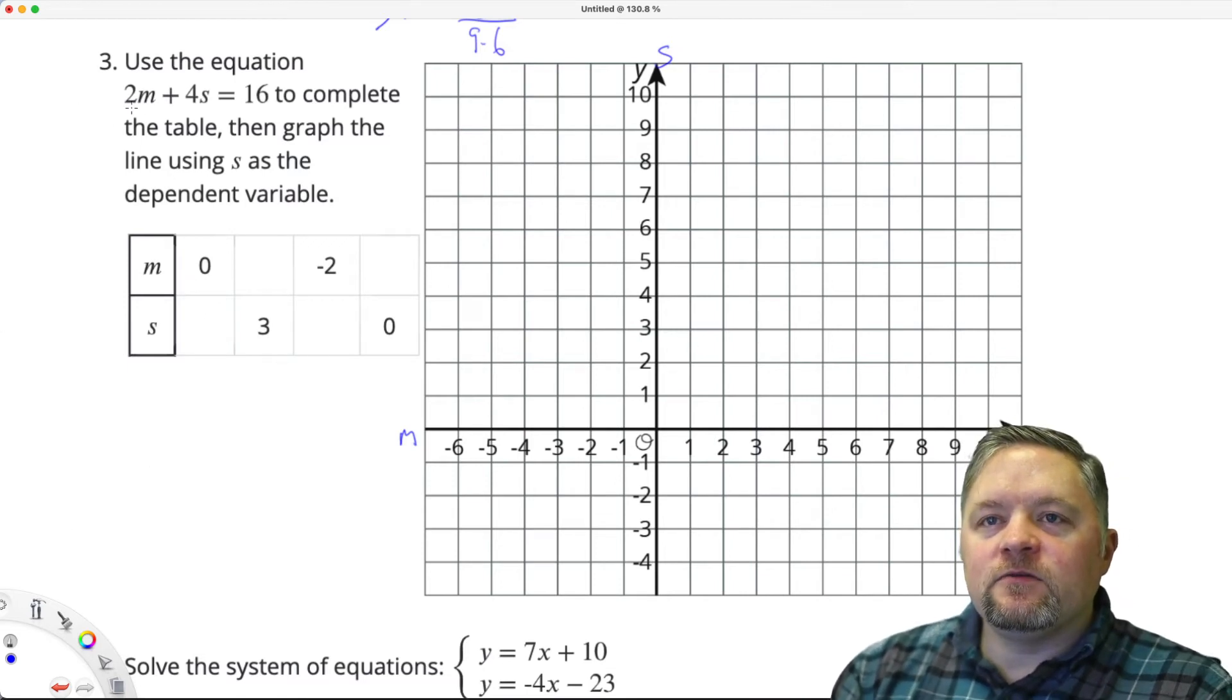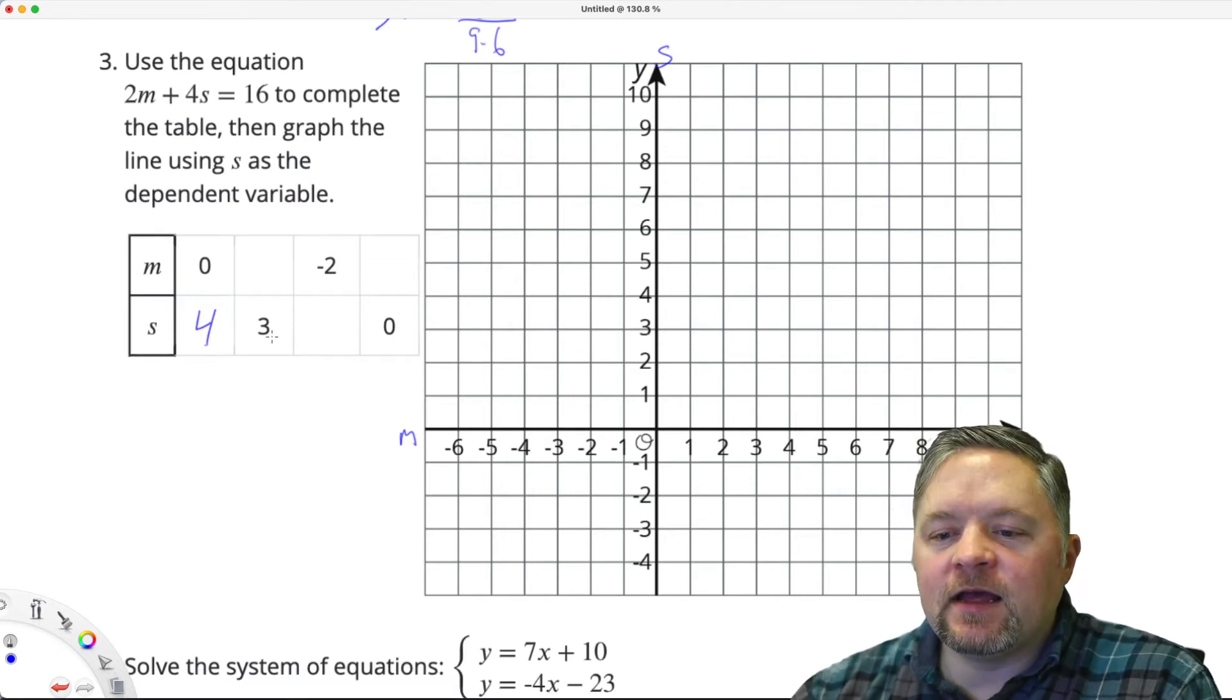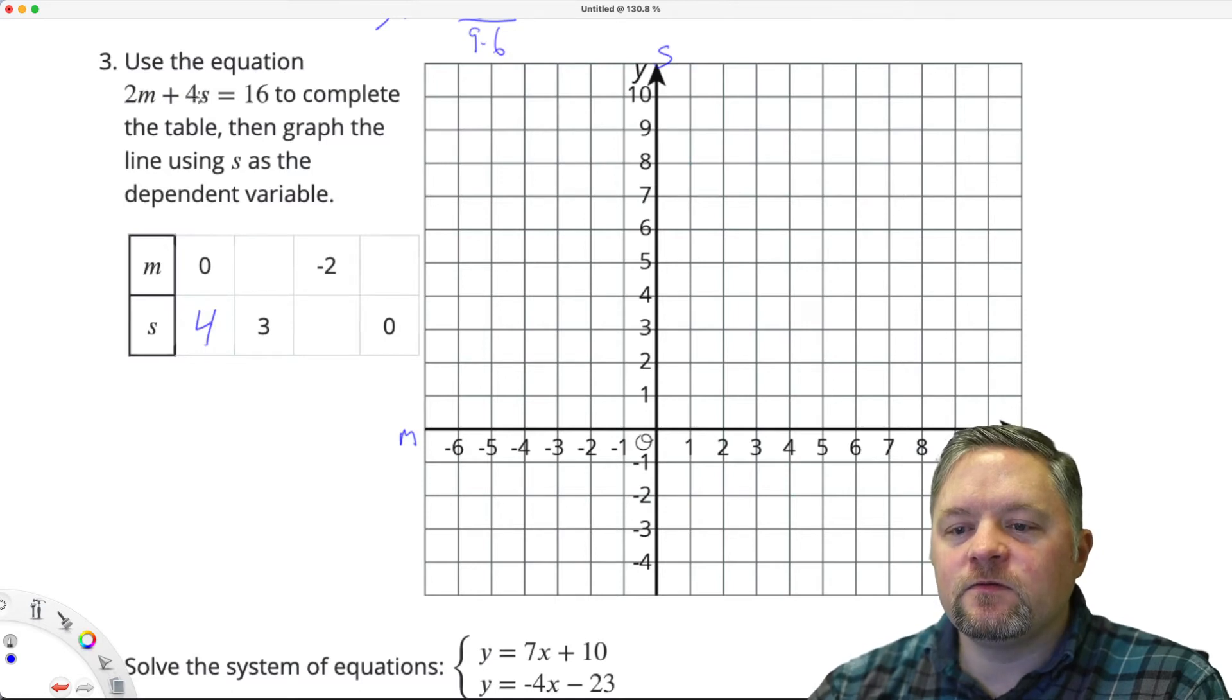Now, 2m plus 4s equals 16. 2 times 0 is 0. 4 times what is 16? That would be 4. Now, if S is 3, 4 times 3 is 12. 16 subtract 12 is 4. 2 times 2 is 12.